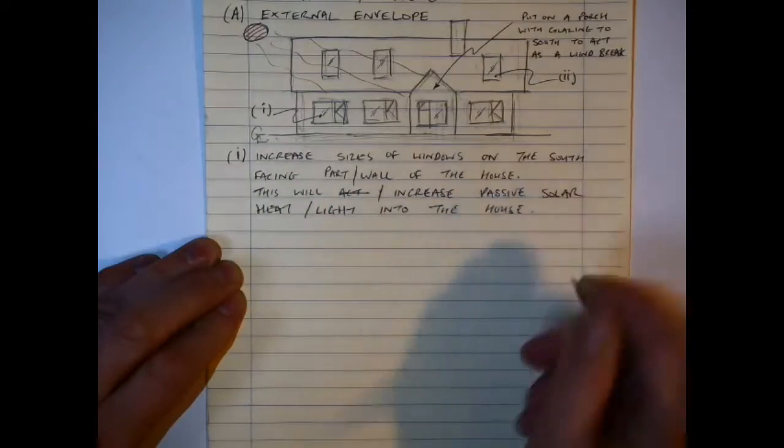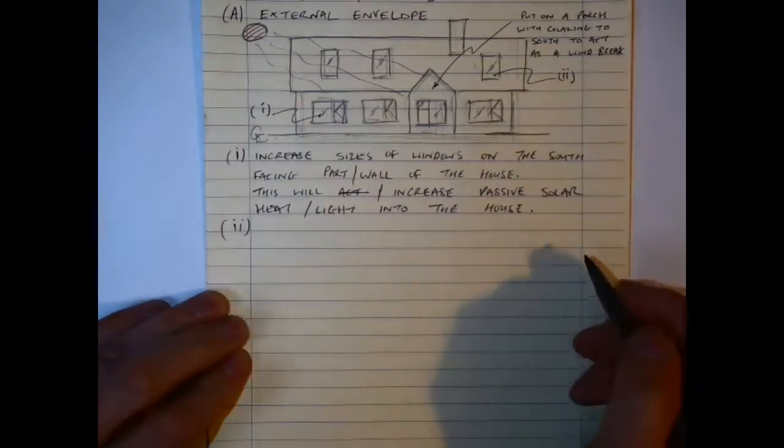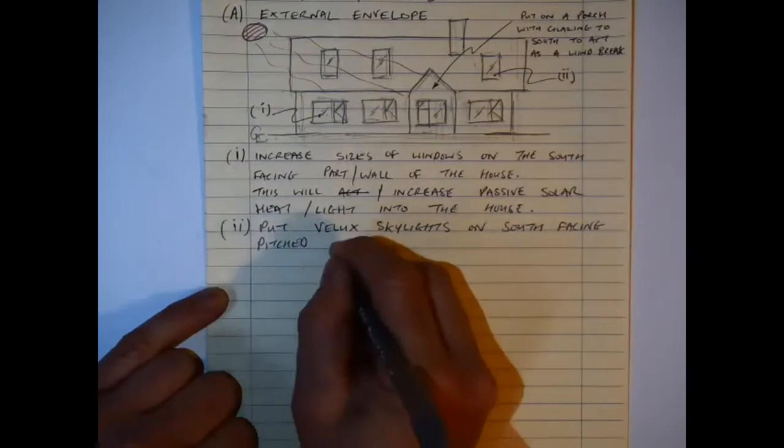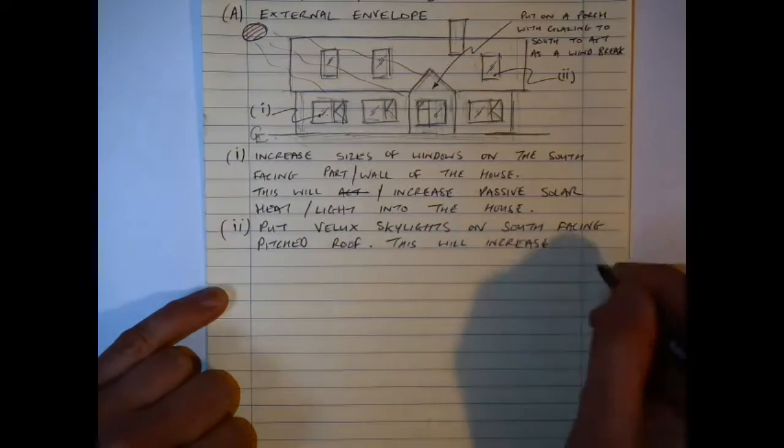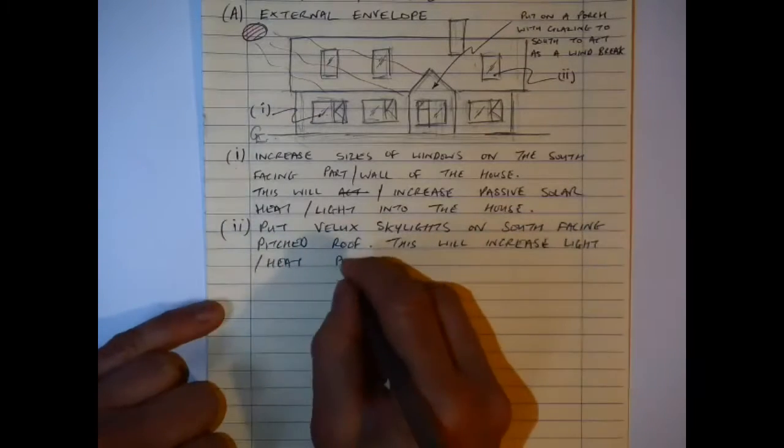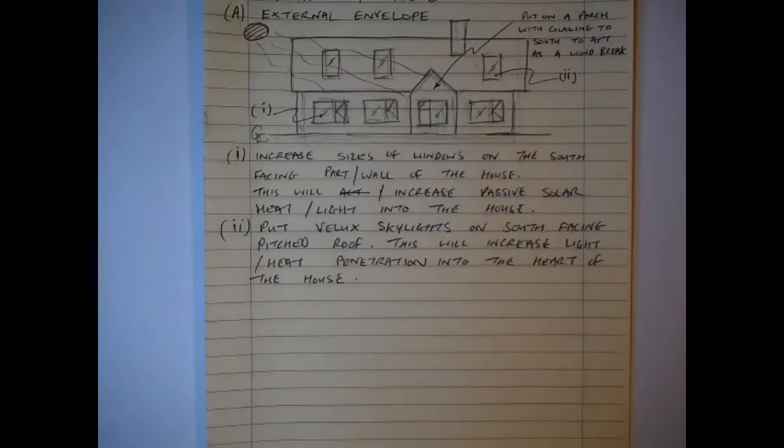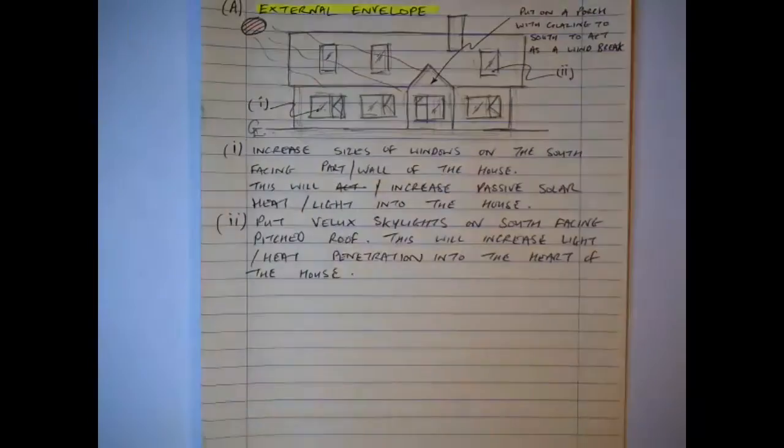This will increase the passive solar heat and light that's getting into the house. And the other part that I'm offering here in the sketch is that I put Velux skylights in the side facing pitch. This will also increase the heat and light penetration into the heart of the house. So simple - and I've got my sketch, that's the external envelope.